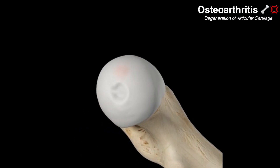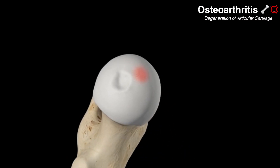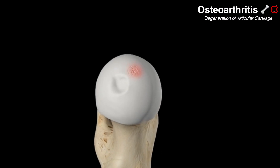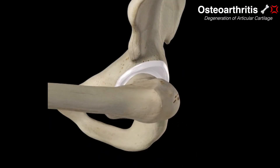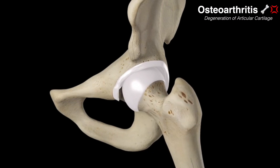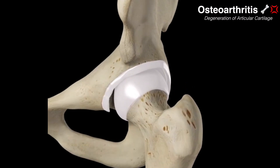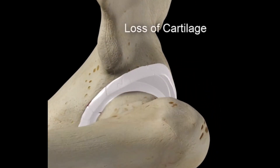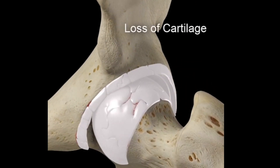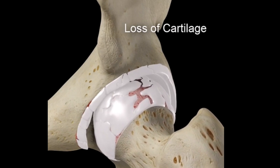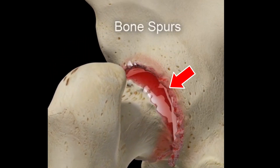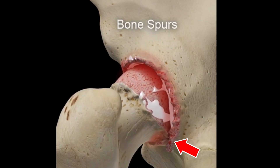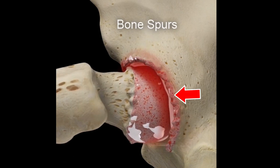When this cartilage becomes damaged from gradual wear and tear or via trauma, this is called osteoarthritis. This results in narrowing of the joint space and friction-induced inflammation. Over time this could progress to the development of bony growths, also called osteophytes or bone spurs, which can limit movement and be painful.